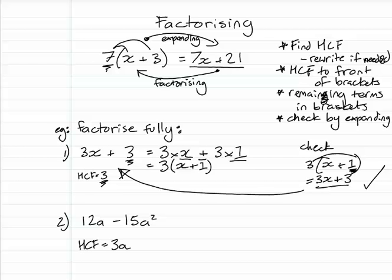Rewrite if you want. 3a times 4 minus 3a times 5a, because 3a times 5a will give you the 15a. Negative 3a times 5a gives you that negative 15a. Bring our HCF out the front, 3a, and in the brackets, 4 minus 5a. Expand back to check if you want.